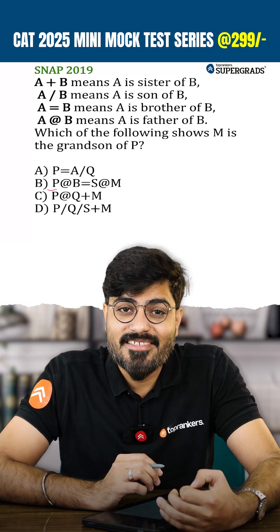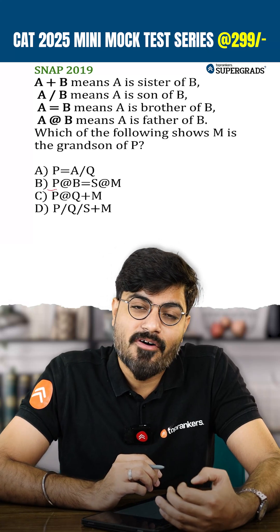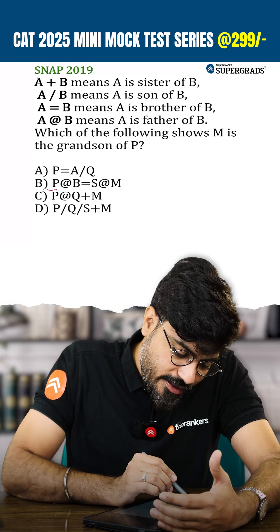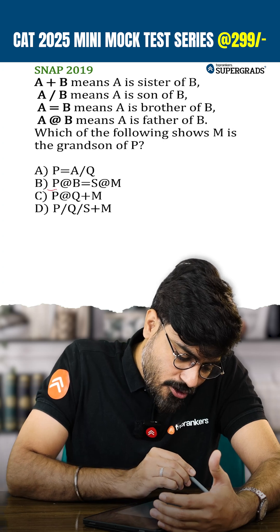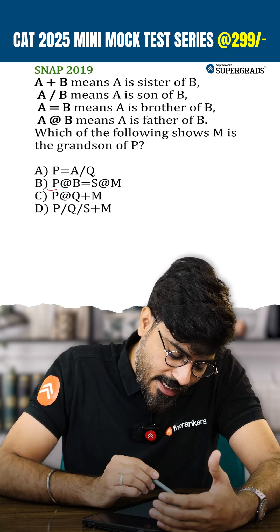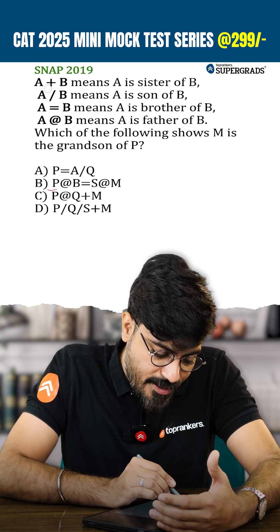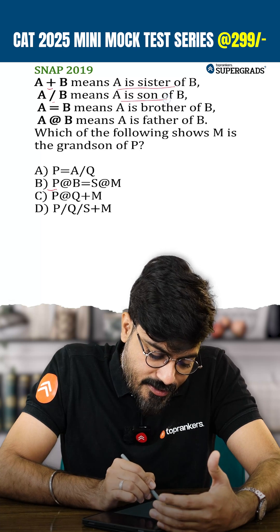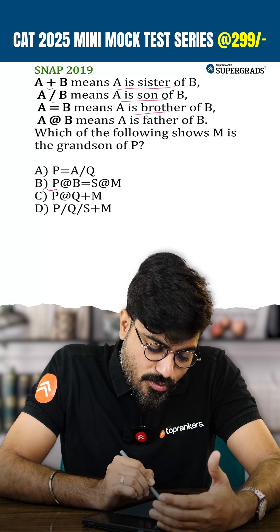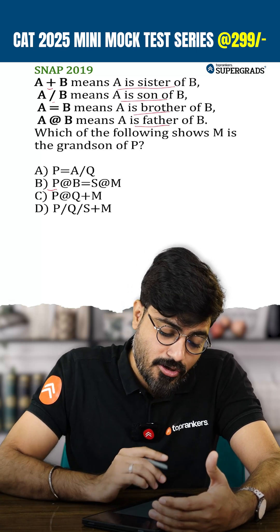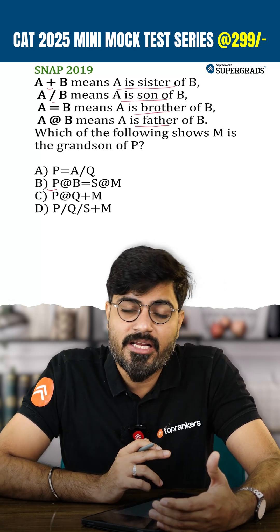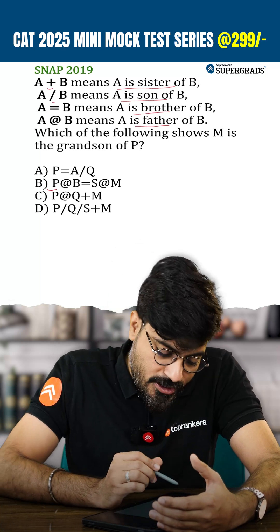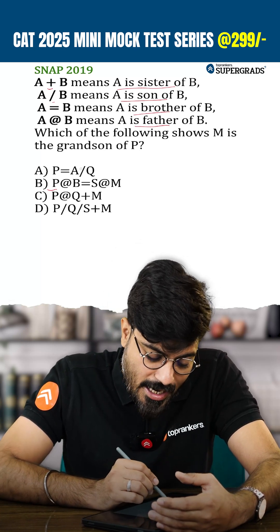Welcome to DILR 60 seconds. Let's look at this question from SNAP 2019 where they have given symbols to represent various blood relations. As soon as we look at such questions, you need not decode every relation and write it down — just go to the options and figure out which option meets the given requirement.